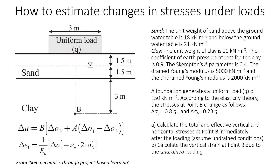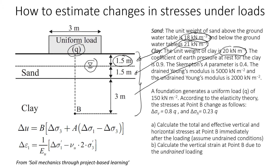This video will explain how to estimate changes in stresses under different loads. We have soil conditions with sand and clay and we're going to apply some load equal to q. The sand is above 3 meters thick, the groundwater level is 1.5 meters below the ground surface, the unit weight of sand above groundwater is 18 kN/m³, and below is 21 kN/m³. The clay has a unit weight of 20 kN/m³, and point B is 3 meters into the clay.